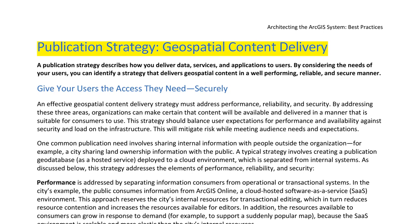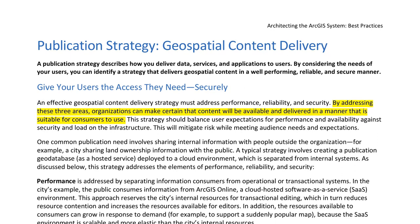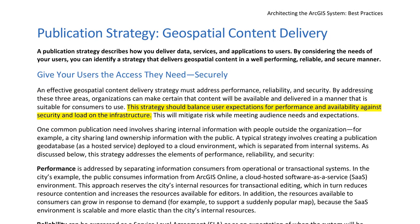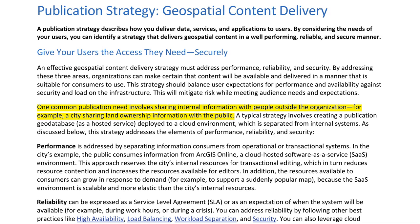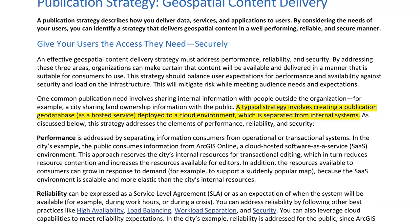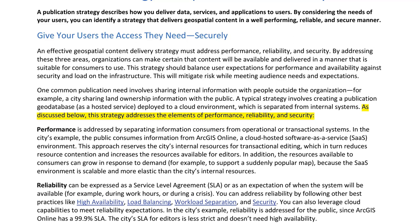Publication Strategy — Geospatial Content Delivery. A publication strategy describes how you deliver data, services, and applications to users. By considering the needs of your users, you can identify a strategy that delivers geospatial content in a well-performing, reliable, and secure manner. An effective strategy must address performance, reliability, and security. A common publication need involves sharing internal information with people outside the organization — for example, a city sharing land ownership information with the public. A typical strategy involves creating a publication geodatabase as a hosted service deployed to a cloud environment, separated from internal systems. Performance is addressed by separating information consumers from operational systems, using a SaaS environment like ArcGIS Online. Reliability can be addressed by following best practices like high availability and load balancing, and leveraging cloud capabilities — for example, ArcGIS Online has a 99.9% SLA. Security means exposing the right content to the right consumers while protecting the enterprise.